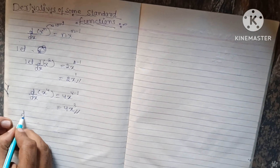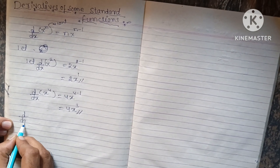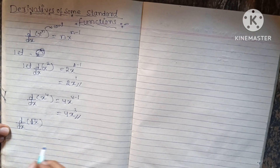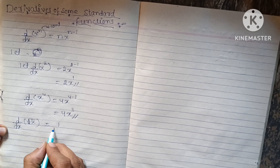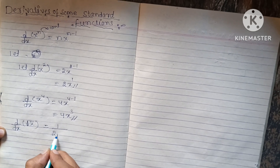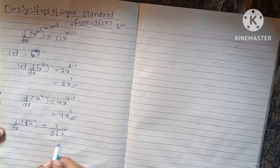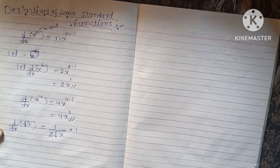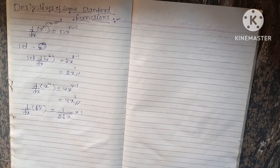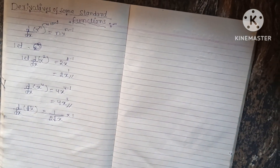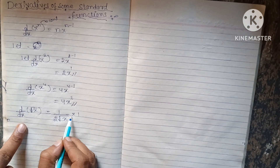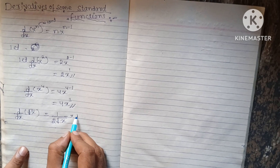Now we will see, for example, we have differentiation of root x. We have to separate each and every term separately. So the differentiation of root x will be 1 by 2 root x. The differentiation of x will be 1.